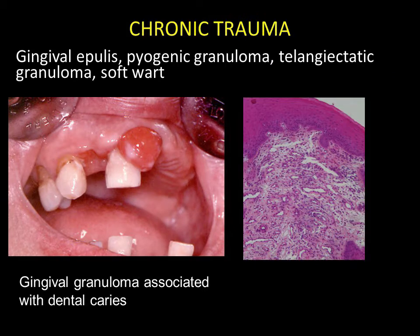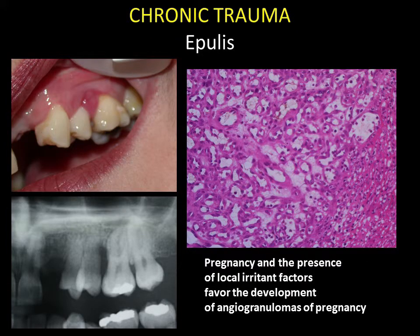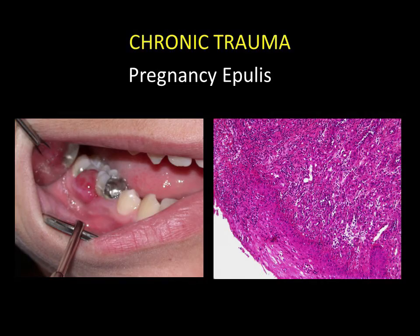These epulis lesions, which can also be called pyogenic granuloma or telangiectatic granuloma, correspond to granulomas with a local cause linked to dental caries. These forms of epulis are favoured by systemic factors, in particular hormonal factors during pregnancy. Epulitic lesions are frequently observed in relation to local dental or periodontal lesions. The lesion can be seen to be extremely inflammatory and vascularised. Generally, these lesions disappear after childbirth, but surgical exeresis may be required.